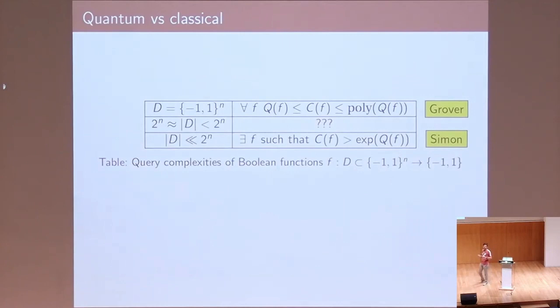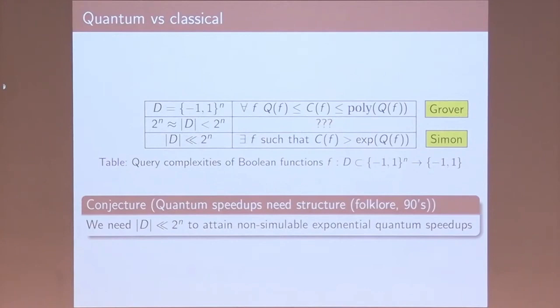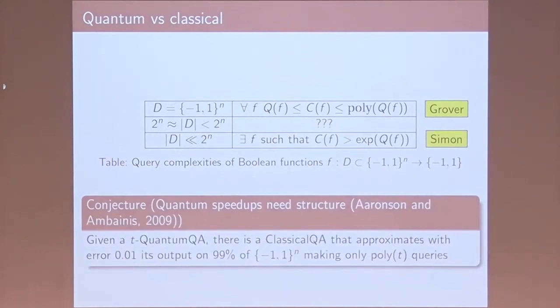What remains unknown is the regime in between. No example is known of a problem that achieves a super-polynomial quantum speedup that cannot be classically simulated. Since many have tried and failed to find such speedups, the belief is that they don't exist — you need a lot of structure to obtain super-polynomial quantum speedups. This is a folklore conjecture from the 90s, and Aaronson and Ambainis proposed a more precise formulation: that a quantum query algorithm can be simulated classically with small error almost everywhere using only a polynomial number of extra queries.